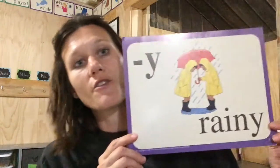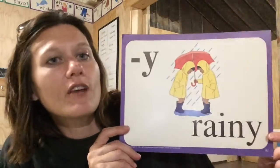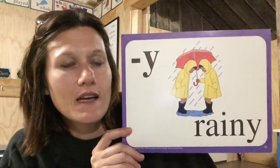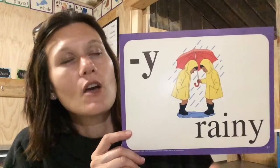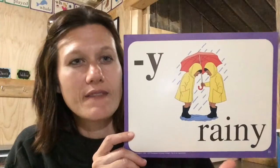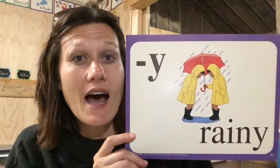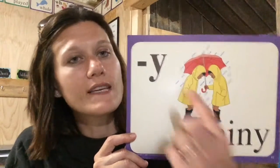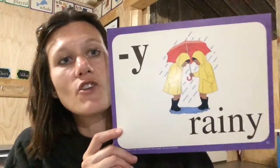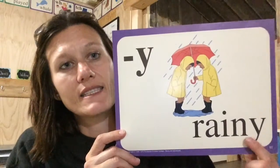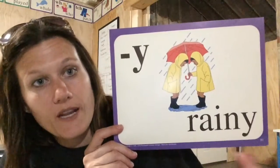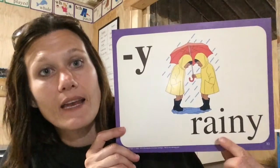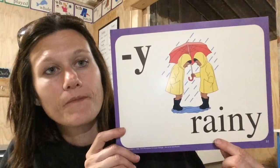The first one is another suffix. We're going to look at the e in rainy. You remember when there was a y in that special sound — i in fly? Well, this y says e, and you find it as a suffix at the end of a root word. So the root word in the word rainy is rain.